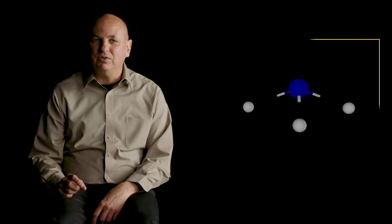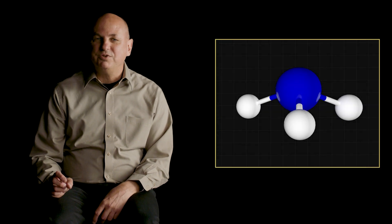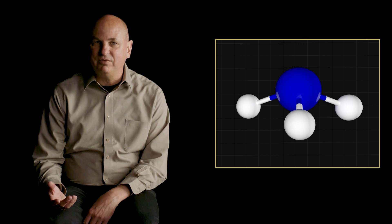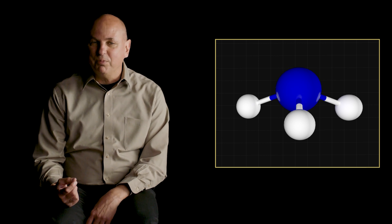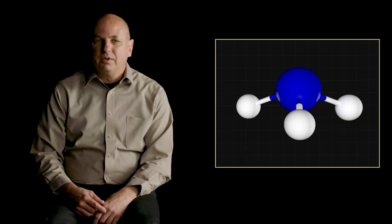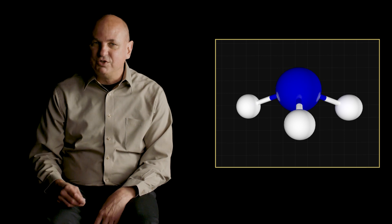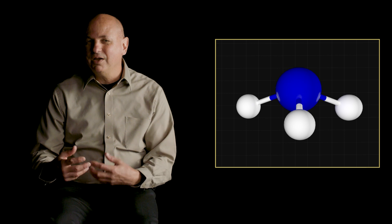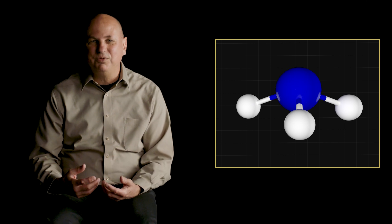But structural formulas don't show us the shape of the molecule. To show shape, we can use a ball and stick model, where each ball is an atom and each stick is a bond. Blue represents the nitrogen atom and white represents the hydrogen atoms. This shows that the structure is like a pyramid, with the nitrogen atom on top and the hydrogen atoms forming the base. A ball and stick model is excellent at showing the 3D arrangement of atoms — we can clearly see the bond length and the angles between these bonds.